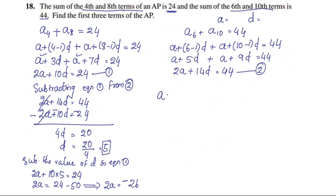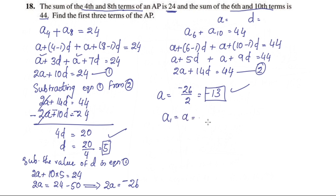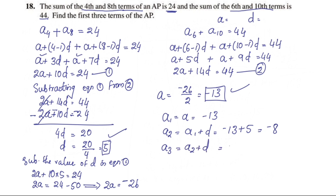Therefore a is equal to negative 26 divided by 2, which is equal to negative 13. So a1 is negative 13, a2 is negative 13 plus d, which is negative 13 plus 5, equal to negative 8.